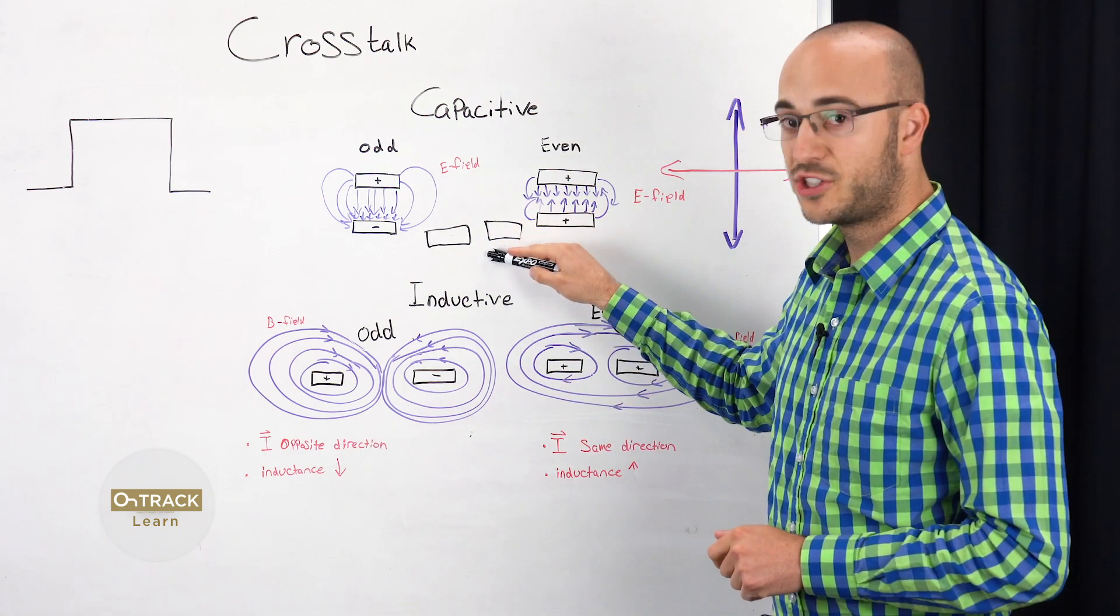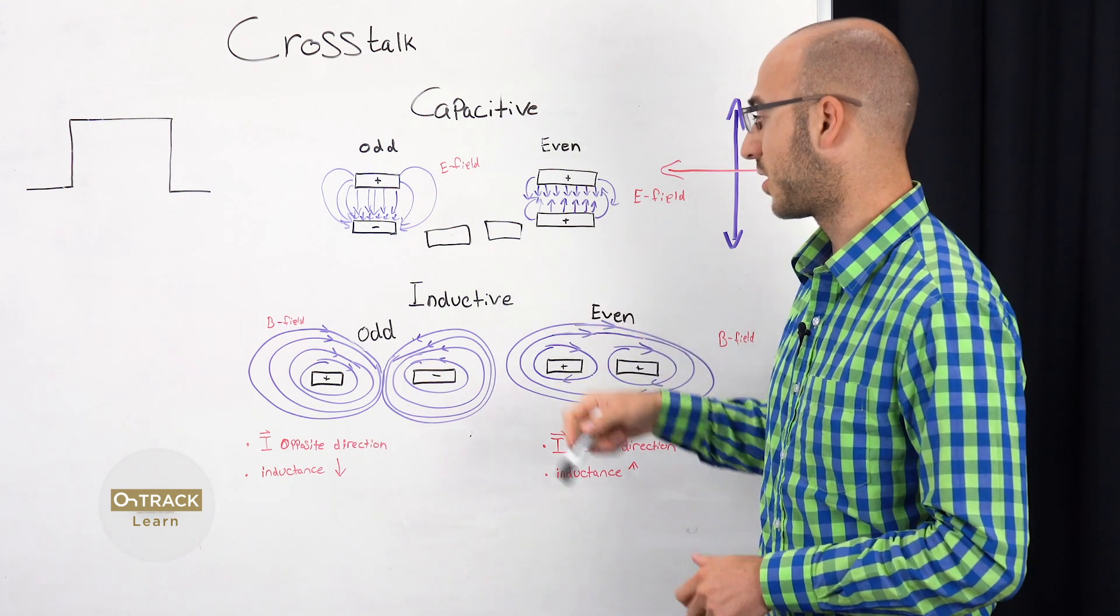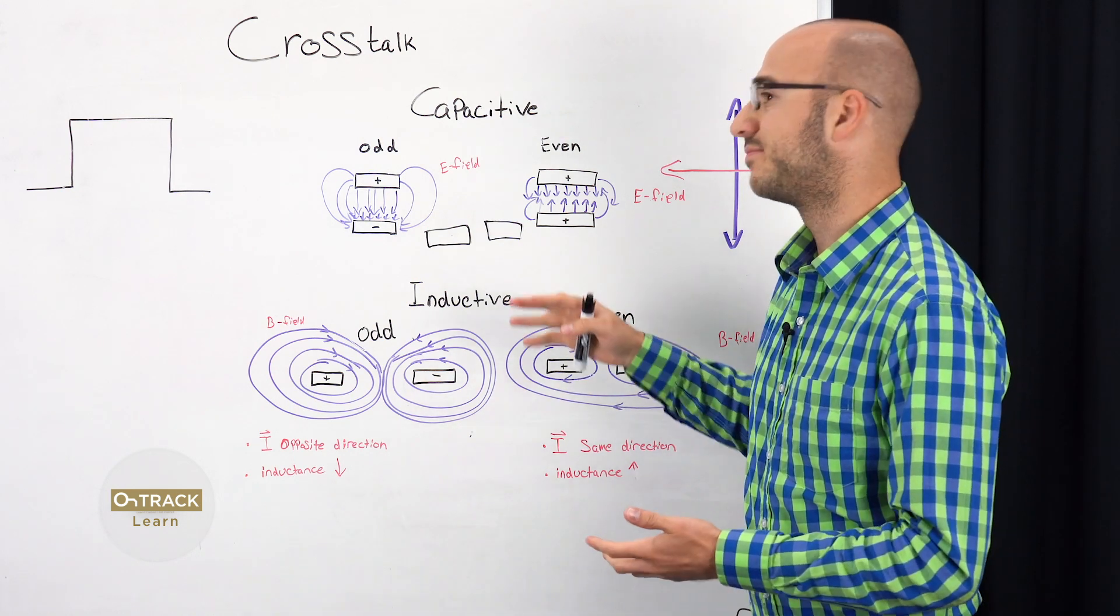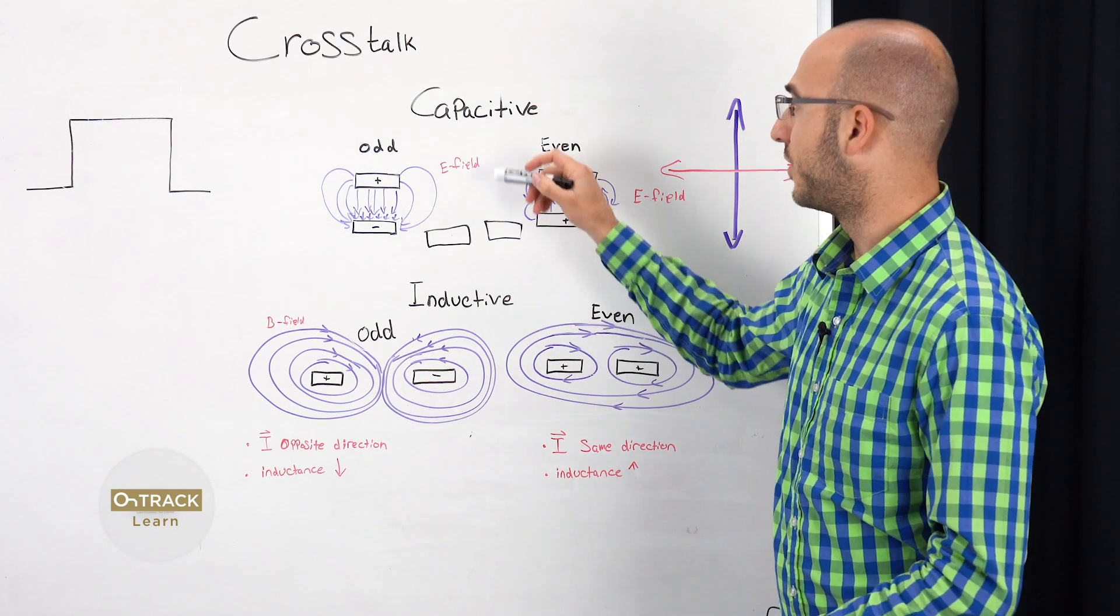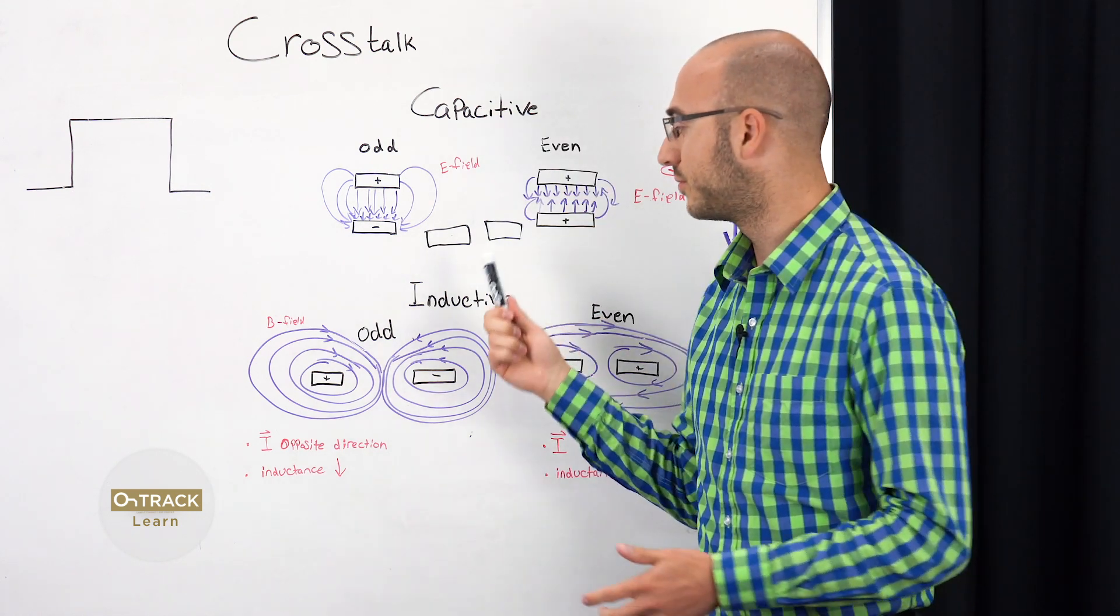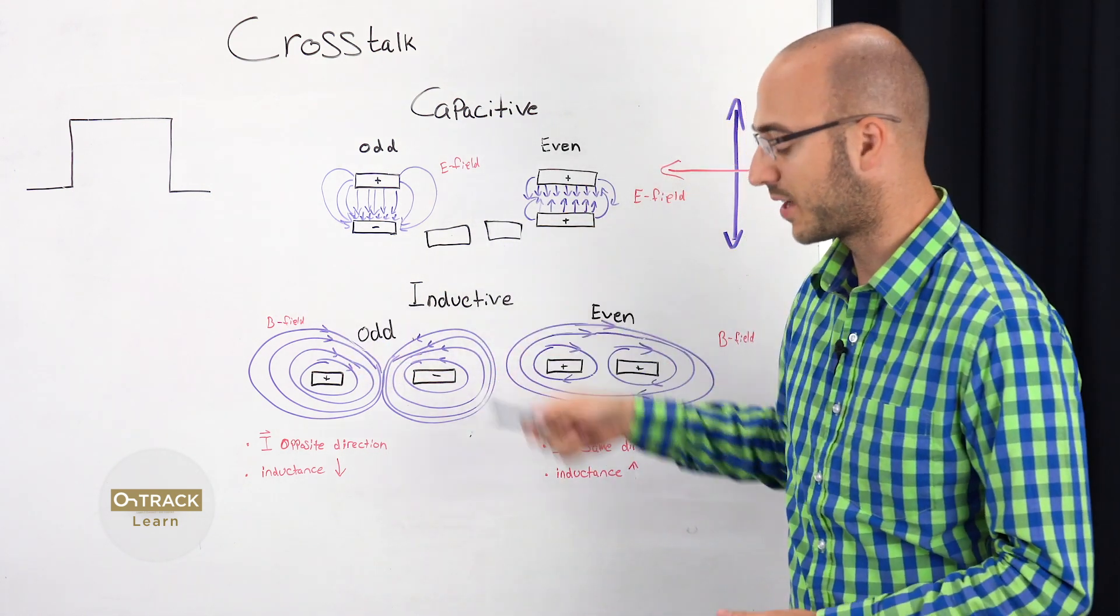You can also have capacitive crosstalk on the same layer if they're next to each other. But when you're in this configuration, inductive crosstalk will overpower, overshadow the effects of capacitive crosstalk. So you don't really need to worry about it. This is what you need to worry about at that time.